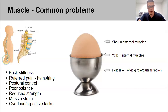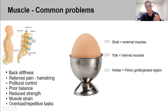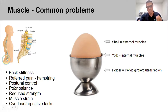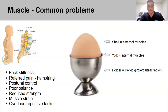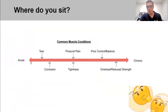If you're having muscle problems, this affects your back in several ways: local back stiffness, referred pain from muscles like the hamstring to the lower back, postural issues when muscles aren't strong enough to bear load, poor balance — for example, struggling to stand on one leg while putting on pants — and reduced strength from injuries or repetitive tasks. These are signs that may indicate you are building towards back pain issues.